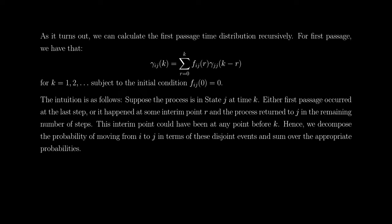The intuition is as follows: suppose the process transitions from state i to state j in k steps. Either first passage occurred at the last step, or it happened at some interim point in time r, and the process then returned to j in the remaining number of steps. This interim point could have been anywhere up to and including k. So we decompose the probability of transitioning from i to j in terms of these disjoint events and sum over the appropriate probabilities.